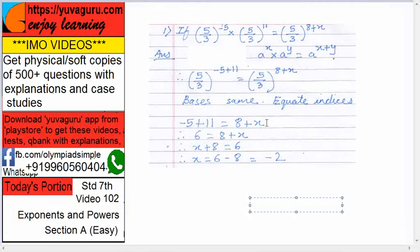Right, always remember, if the bases are same in maths, you can definitely equate the indices. So minus 5 plus 11 equals 8 plus x. Solve this, you will get 6 equals 8 plus x, then x equals 6 minus 8, that is minus 2.